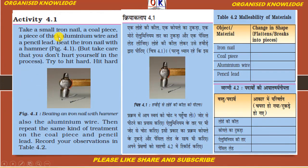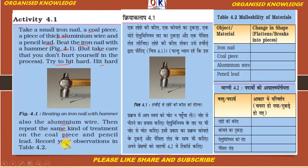Take a small iron nail, a coal piece, a piece of thick aluminium wire, and a pencil lead. Toh aapko kya dekhna hai: ek lohe ki keel leni hai, ek koile ka tukda lena hai, aur aluminium ki taar, aur ek pencil jo hai — pencil ke jo lead hota hai woh lena hai. Beat the iron nail with a hammer — iron nail ko aapne hammer se beat karna hai, but take care that you don't harm yourself. Phir same process aluminium wire ke saath karna hai. Then repeat the same kind of treatment on the coal piece and pencil lead. Aap dekhenge ki iron nail flatten ho jayegi, coal piece ekdam se bikhar jayega toot ke, aluminium wire bhi thin aur flatten ho jayegi, aur jo pencil lead hai woh bhi tukde ho jayegi.